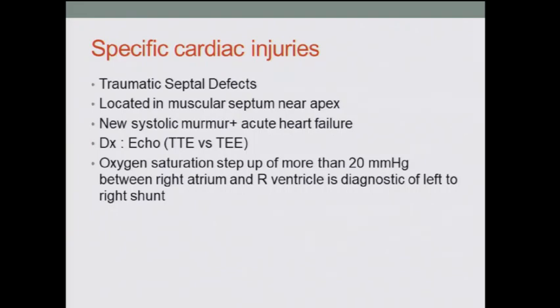With these septal defects, you'll have a new holosystolic murmur — just like a congenital VSD or a post-MI VSD — and you'll have heart failure because of the sudden increase in volume load. If it's a gradual increase over time, as with a small or medium VSD, it's not as significant. But a sudden increase, like acute mitral regurgitation from papillary muscle rupture, causes a lot more heart failure than a chronic process, which is usually asymptomatic for a long period.